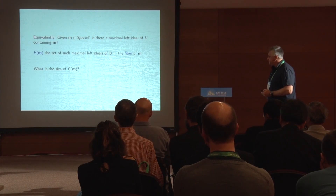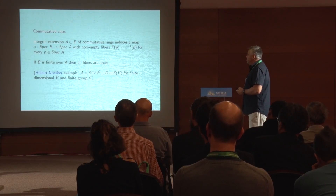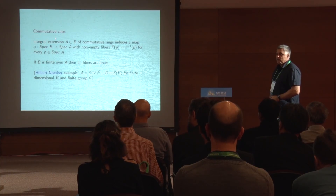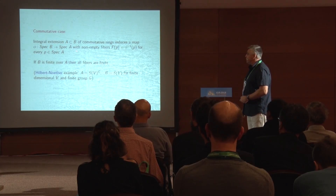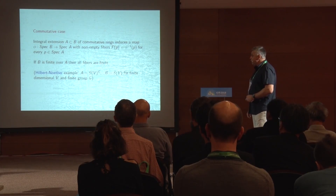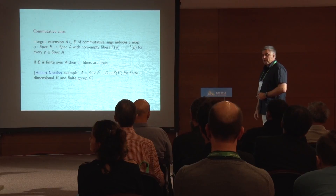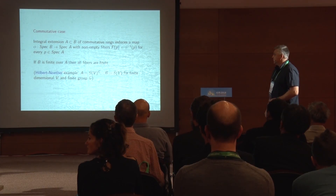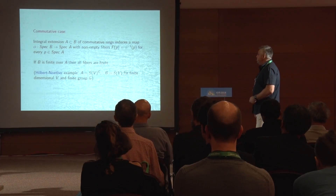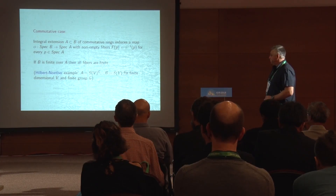Let's look at some examples. The basic example comes from commutative algebra. If we have an integral extension of two commutative rings, we have a natural induced map on the spectra of these rings and the lying-over property: for any prime ideal of A we have a prime ideal of B containing it. This says the fiber is non-trivial. Moreover, if B is finite over A — meaning a finitely generated A-module — then the fiber is finite. The classical example is the Hilbert-Noether example, where B is the polynomial ring and A is the invariant polynomial subring for some finite group G acting linearly on the polynomials.